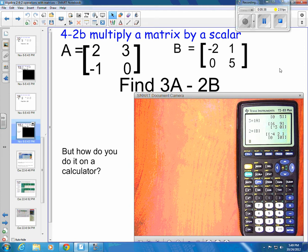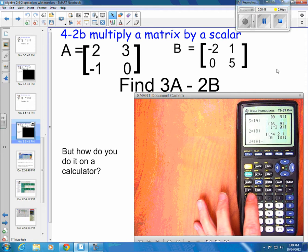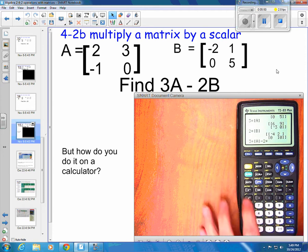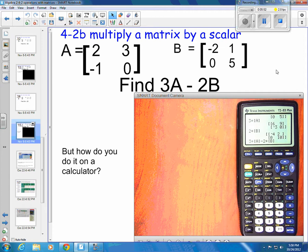Or I could put the whole thing in there, so 3 times my matrix A, and then I'm subtracting, oops, sorry, I didn't mean to do that, 2 times matrix B. So, that says the right thing, 2 times A minus, or 3 times A minus 2 times B. And when I press enter, it does the whole thing, and I get my 10, 7, negative 3, negative 10.